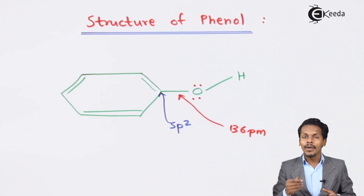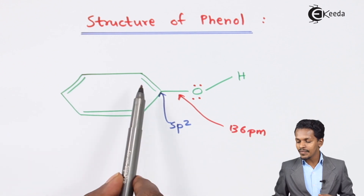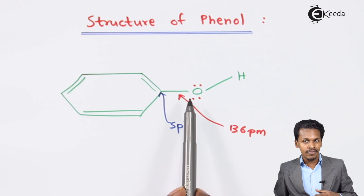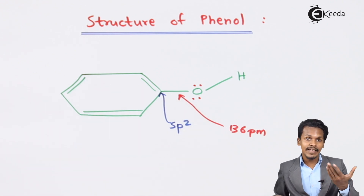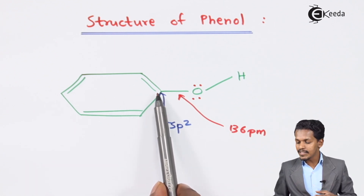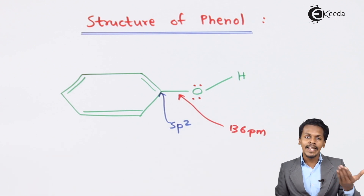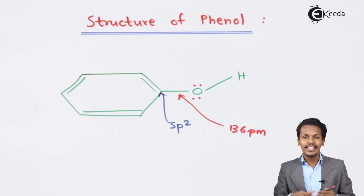This distance of 136 picometers is comparatively less than the distance between the carbon and the OH group in an alcohol. The reason behind that is because of this conjugated system — the delocalization of electrons — and because the oxygen consists of two lone pairs of electrons which are also involved in the resonance or delocalization of electrons. So the C-O bond distance in phenol is 136 pm, which is shorter than in alcohols.